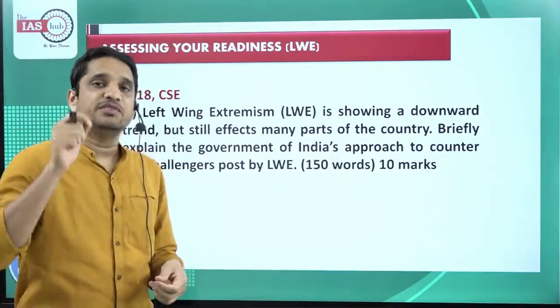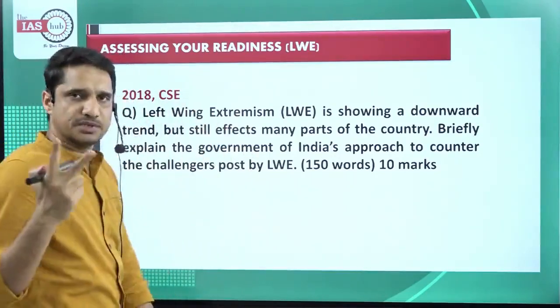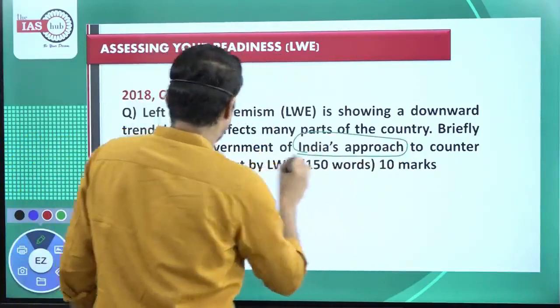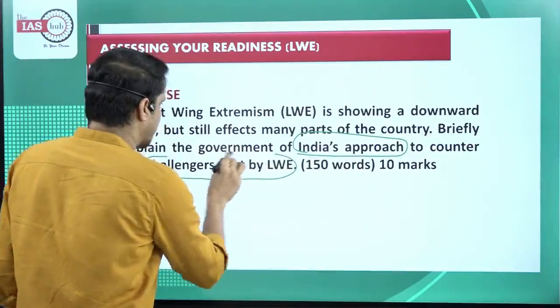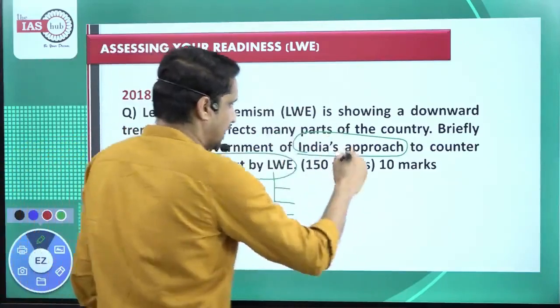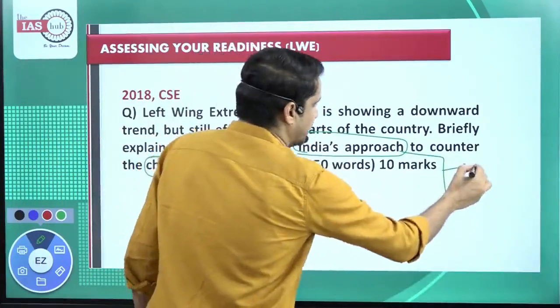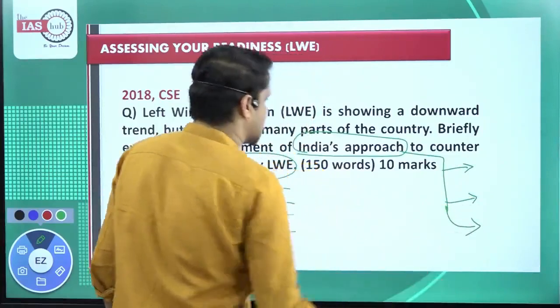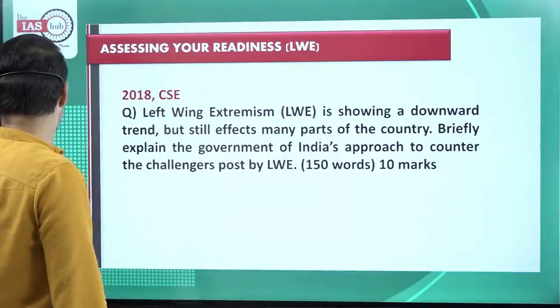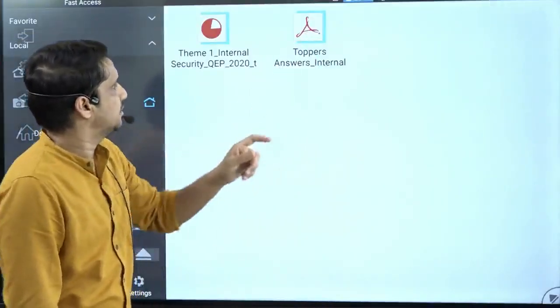The question asks to briefly explain the government of India's approach to counter the challenges posed by left wing extremism. There are two components: first is India's approach to counter, and second is the challenges posed by LWE. First you need to mention the challenges posed by LWE, then enumerate the government of India's approach. It can be a three directional or two directional approach, but we have already discussed the content.